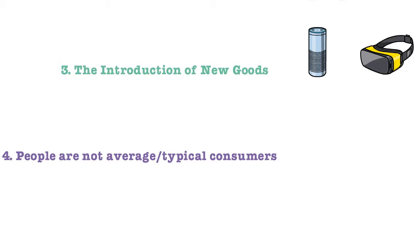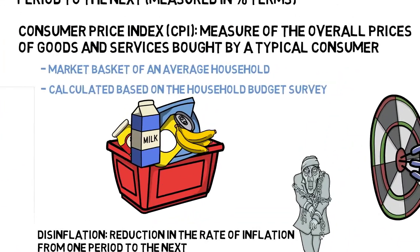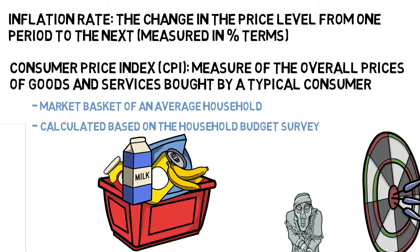And number four, people are not average or typical customers. The CPI tends to work for a typical customer. Very few people are typical, maybe not at the extreme of buying yachts, etc. But if your expenditure isn't represented by the CPI, then it's not measuring correctly for you. So it's not a personalized measure for people.